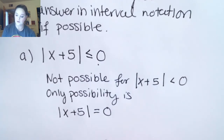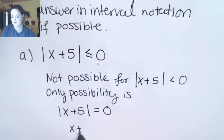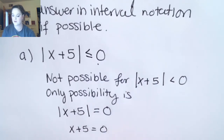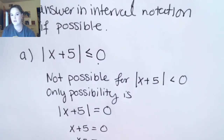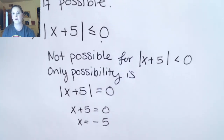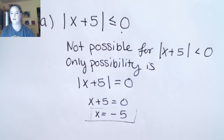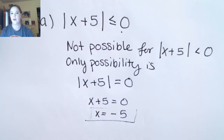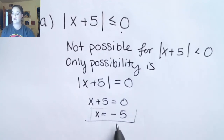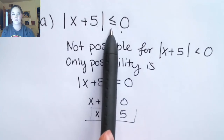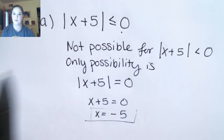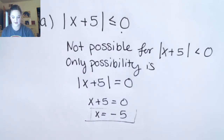The only possibility is that the absolute value of x plus five equals zero. The only number with absolute value zero is zero itself, which tells you the only solution is x equals negative five. When you have a single value like this, you can't write it in interval notation — so this would be my final answer. You only get this one solution because when it says less than or equal to zero, it can't be less than zero, so the only possibility is exactly equal to zero.